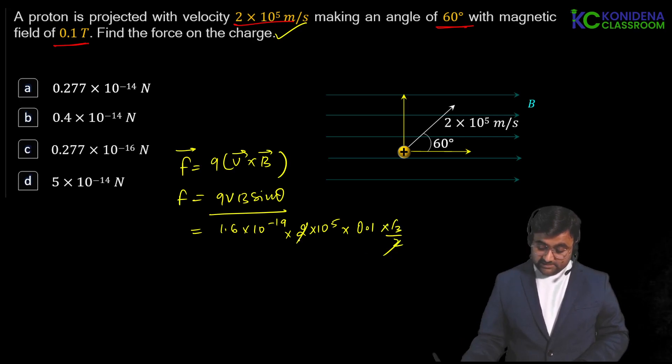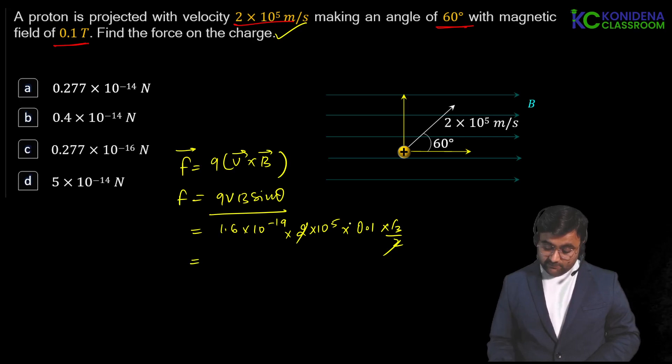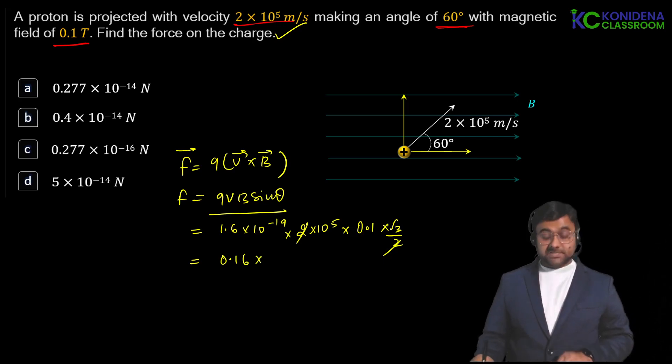Now this 2, 2 canceled out and 0.1 and 1.6 giving you 0.16 times root 3, is basically 1.7. That cross 10 to the power 10 to the power minus 14 because minus 19 plus 5 is minus 14.